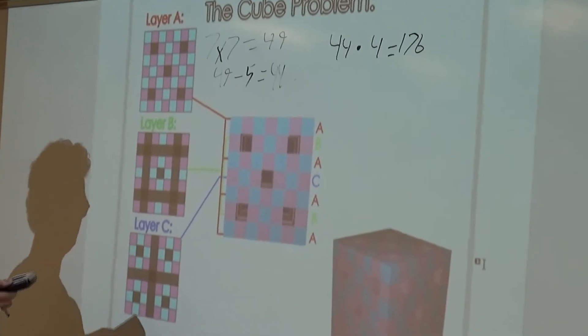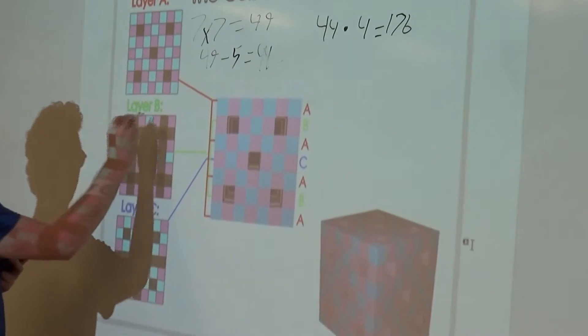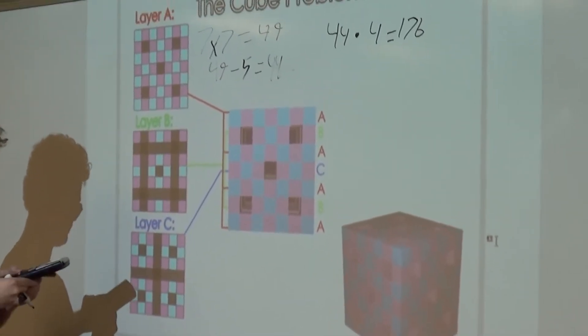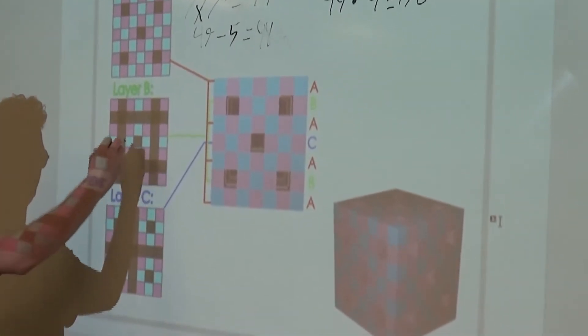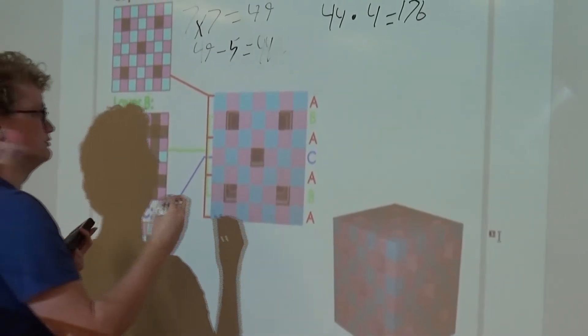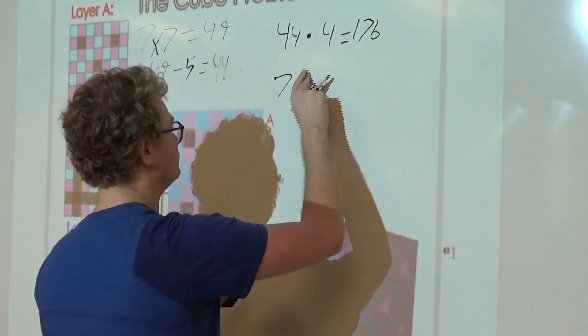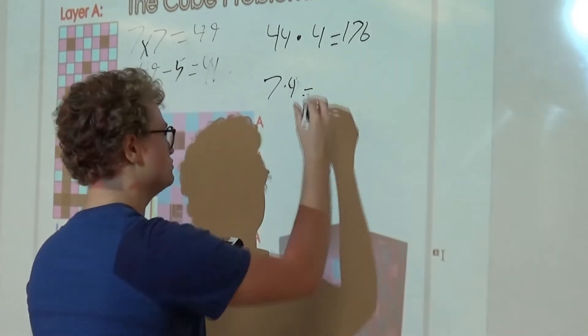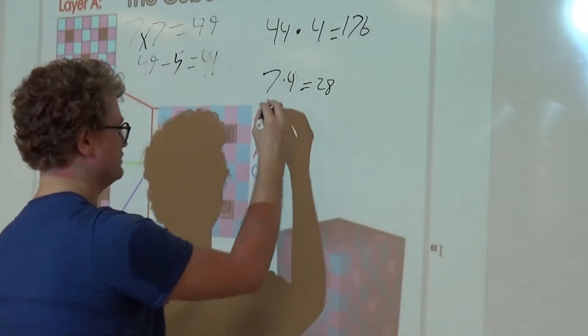For layer B, there's just these four holes on each side that go all the way through. That can be represented as 7 times 4. And then we have one hole here. So 7 times 4 is 28 plus our one intersecting hole.